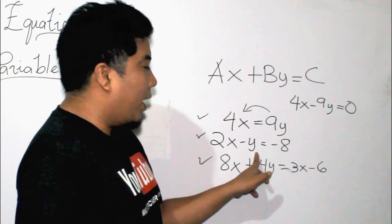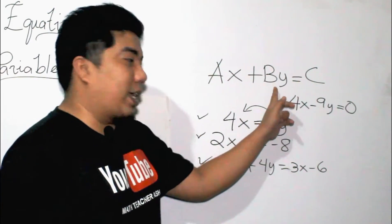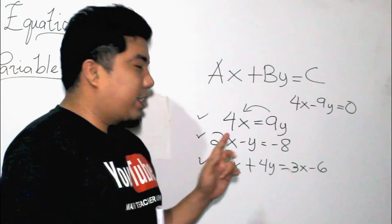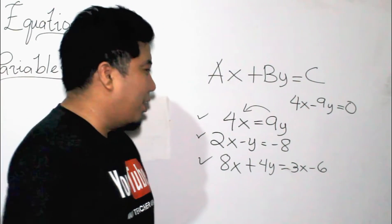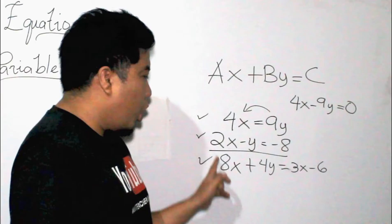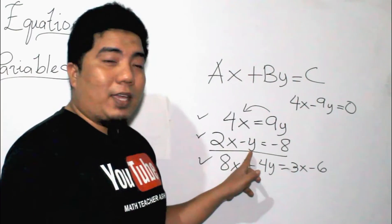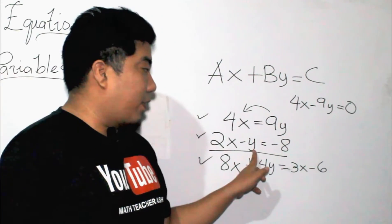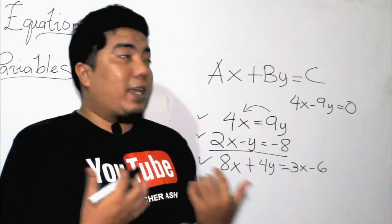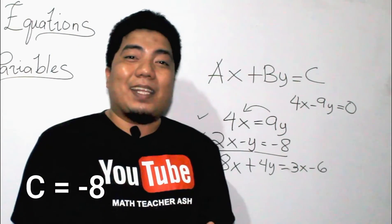Now let us go to the second example. We have 2x minus y is equal to negative 8. As we can see, 2x is already in the first position, y is already in the second, and the number without a variable is on the right side of the equation. Therefore, this is already in the standard form. Your a is positive 2. Your b is negative 1, since if you don't see any number in a variable, there is a hidden coefficient of 1. And c is negative 8.